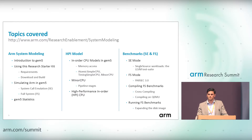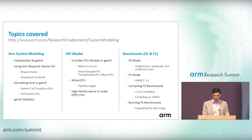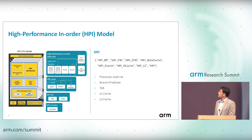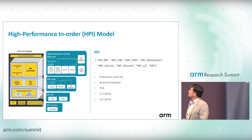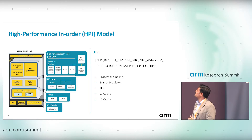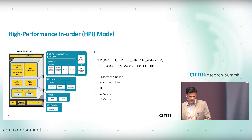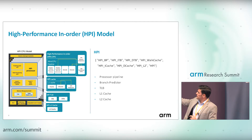For running FS benchmarks, we developed some run scripts to help you run your FS benchmarks. This is the model we are providing with the starter kit. When creating the model, we use the HPI branch predictor, the ITLB and DTLB, the walk cache which is part of the TLB, and we have level 1 and level 2 caches and the core itself. The processor pipeline is similar to the Minor CPU — there are four stages: Fetch1, Fetch2, Decode, and Execute — along with branch prediction and functional units. At the cache level we have the HPI prefetcher and L1 and L2 caches.